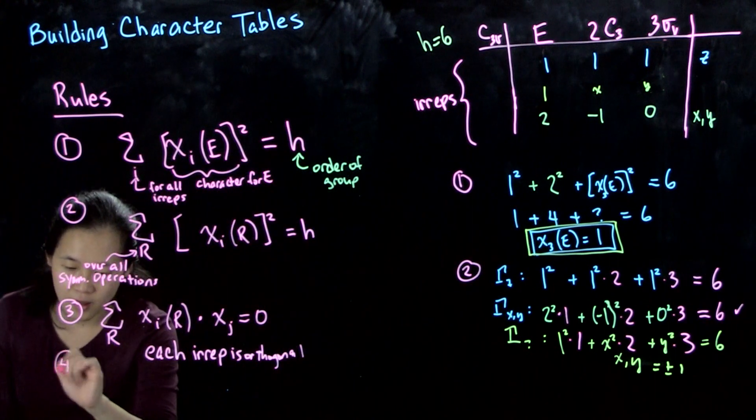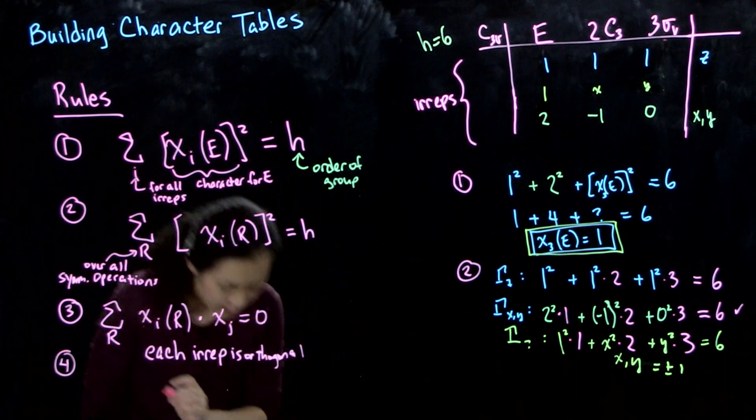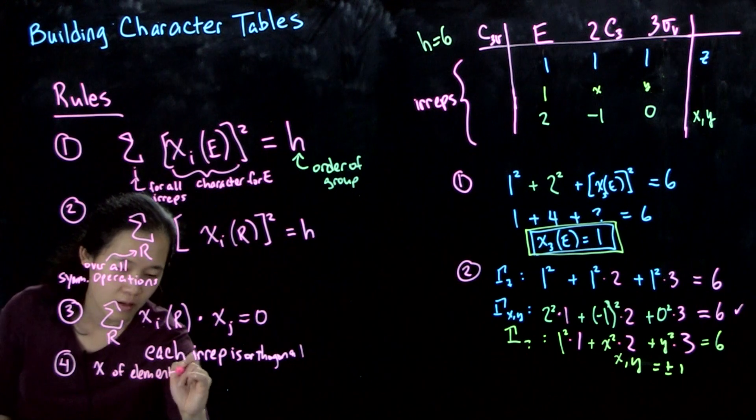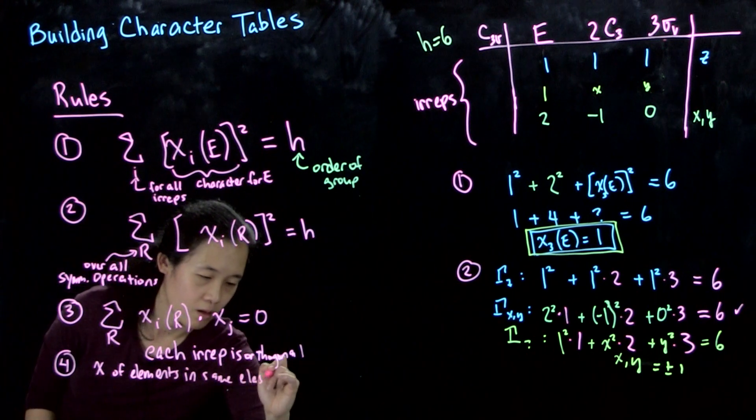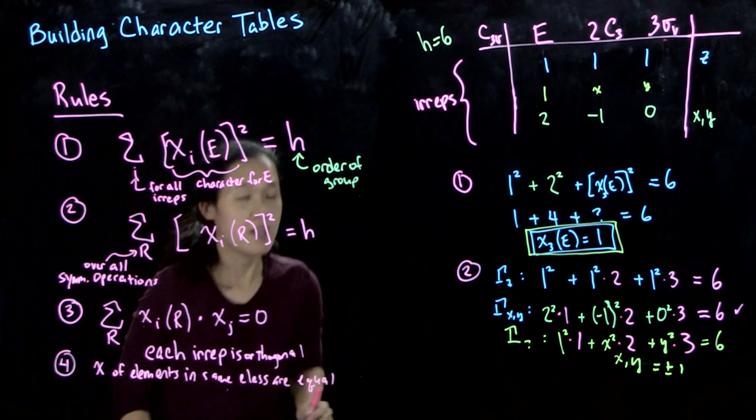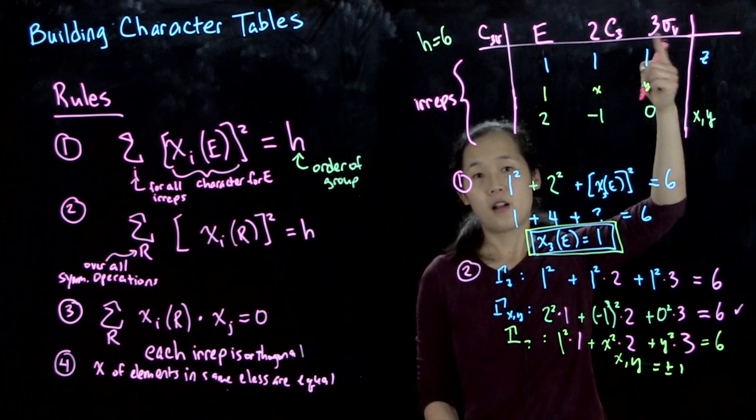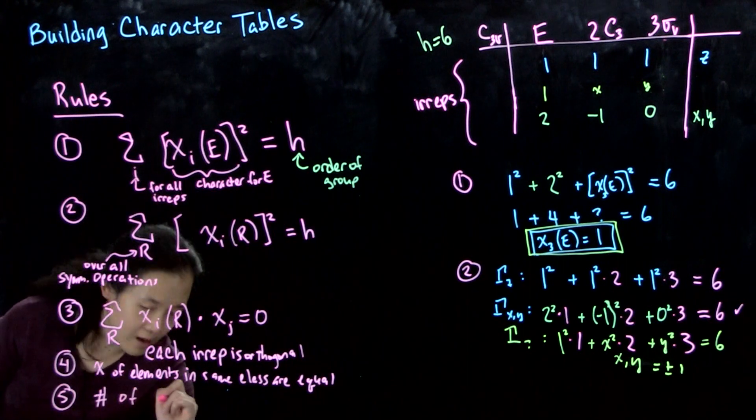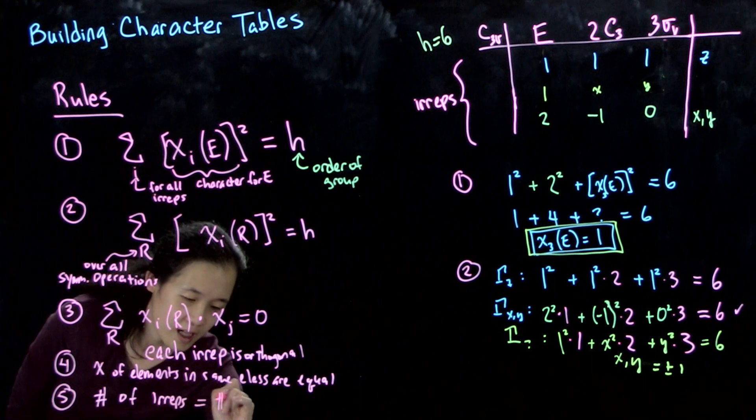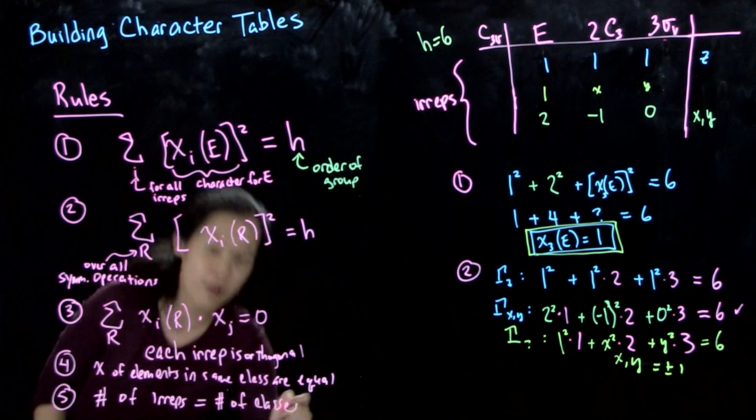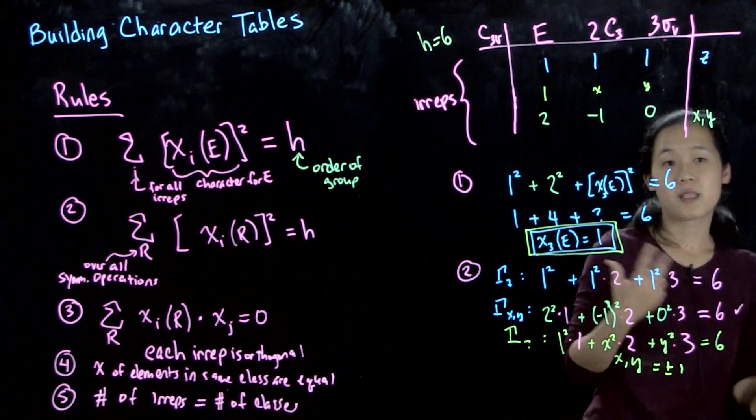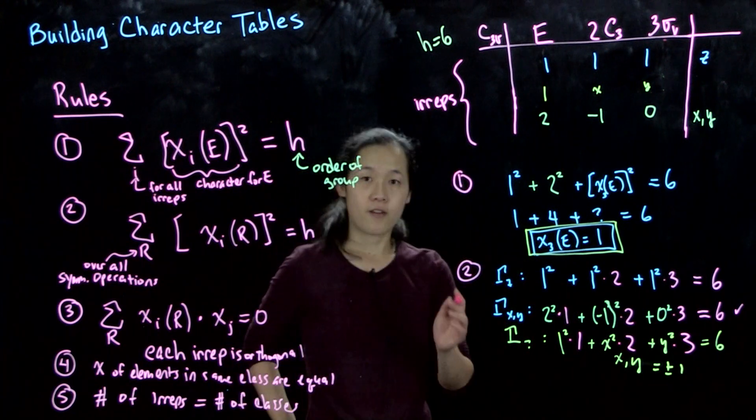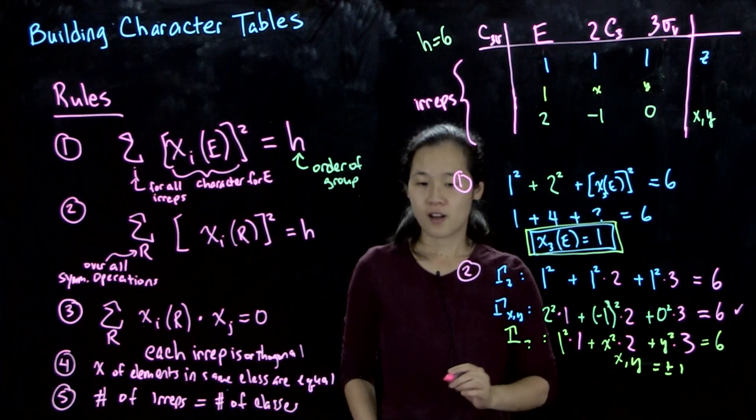The fourth rule is the characters of operations in the same class are the same. We've already talked about this, and this is the reason why we can group the C3s together in the same column. And then the fifth rule is the number of EREPs equals number of classes. We've shown that we have three classes, so we must have three EREPs. With these rules in hand, we can now derive our missing x and y.